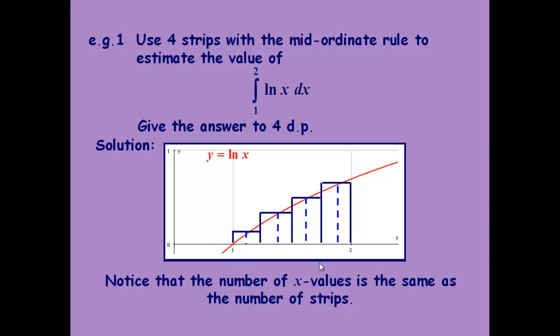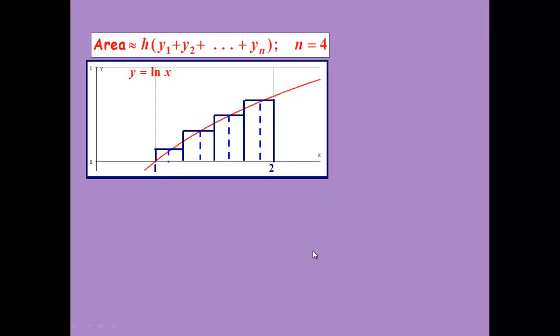The number of x values is the same as the number of strips or rectangles. To work out what the width of each strip is, we simply divide the difference between a and b, between the endpoints, by the number of rectangles. So in this instance, it's just going to be a quarter.